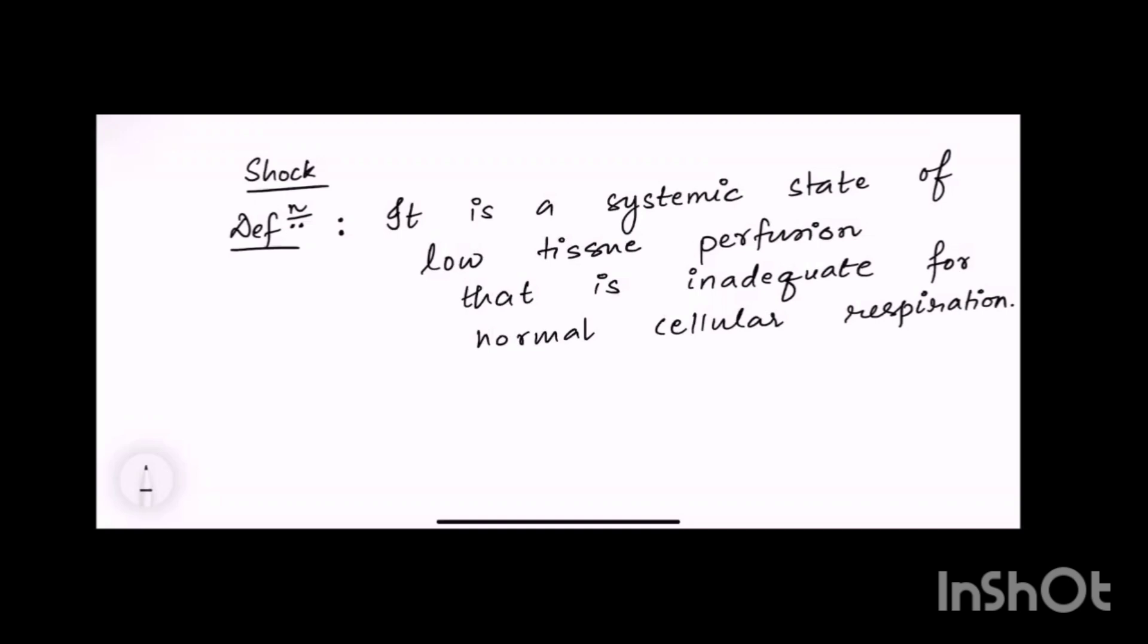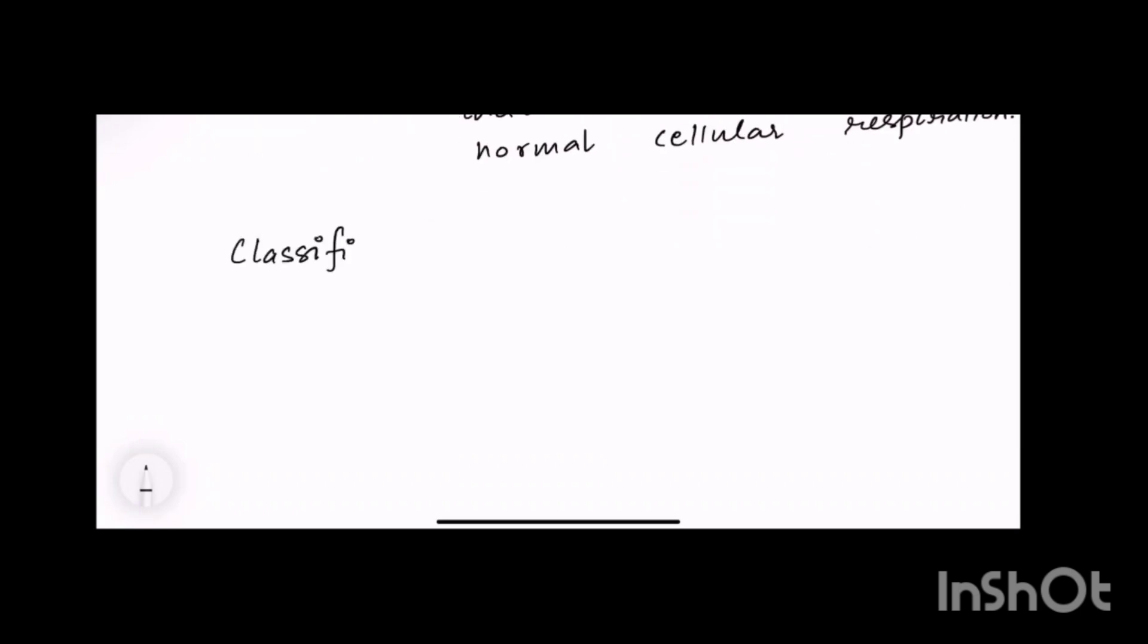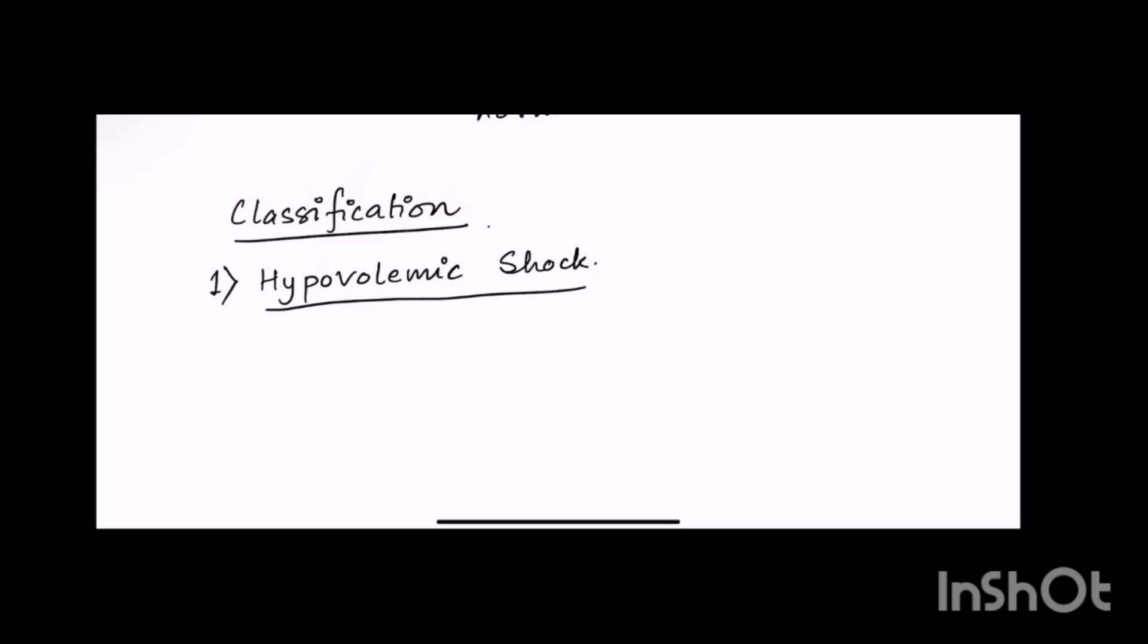So shock is a systemic state of low tissue perfusion that is inadequate for normal cellular respiration. That means it is a condition where less volume of blood or less oxygen is going to the tissues, and that amount of oxygen is not sufficient to carry out normal cellular respiration.